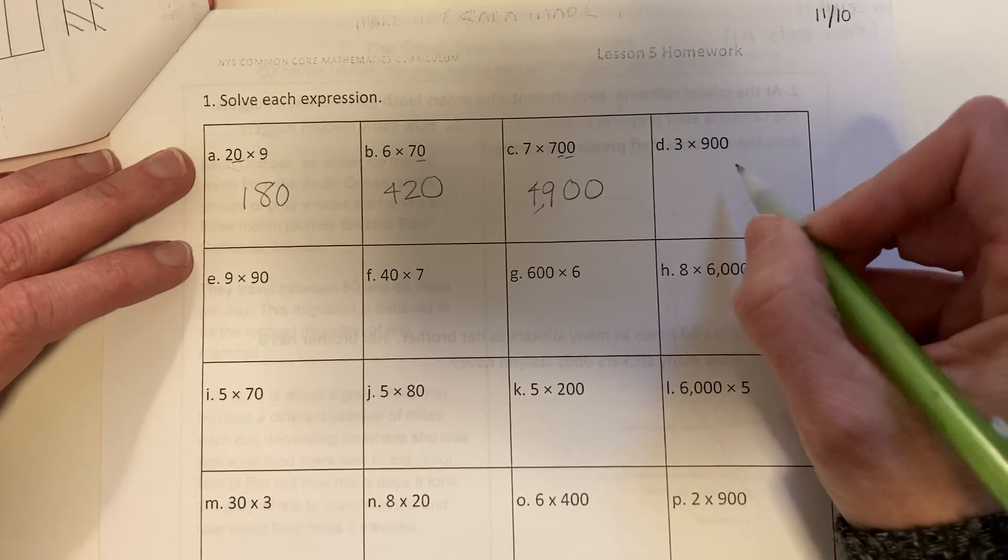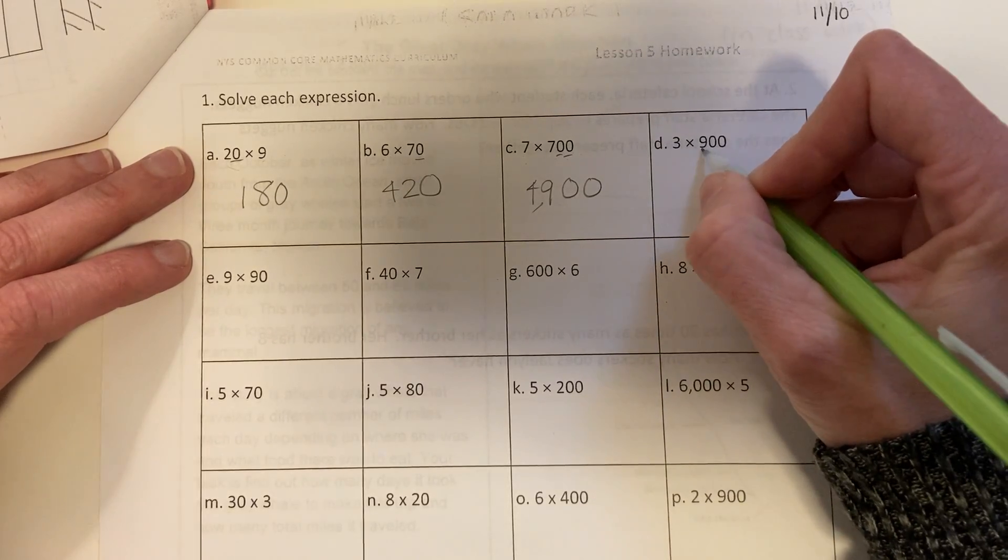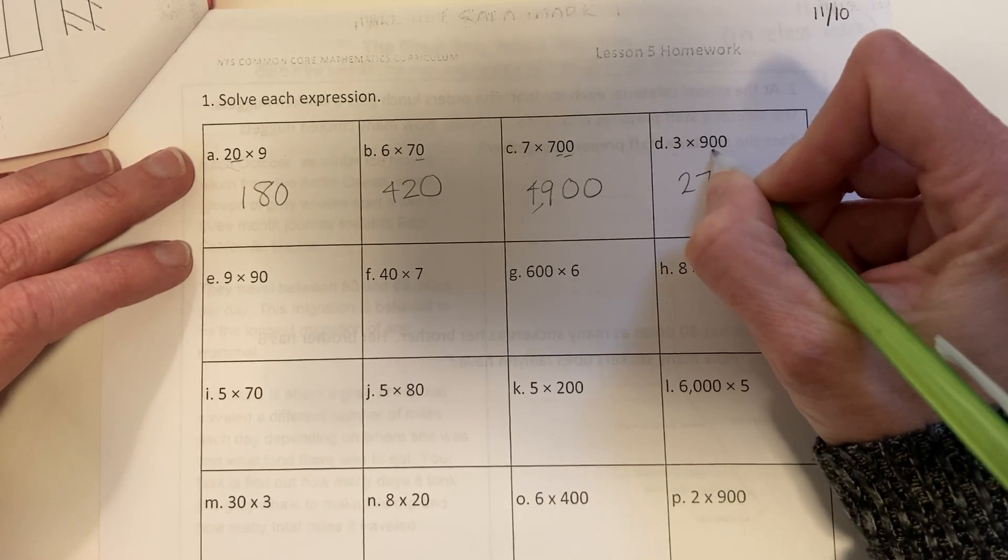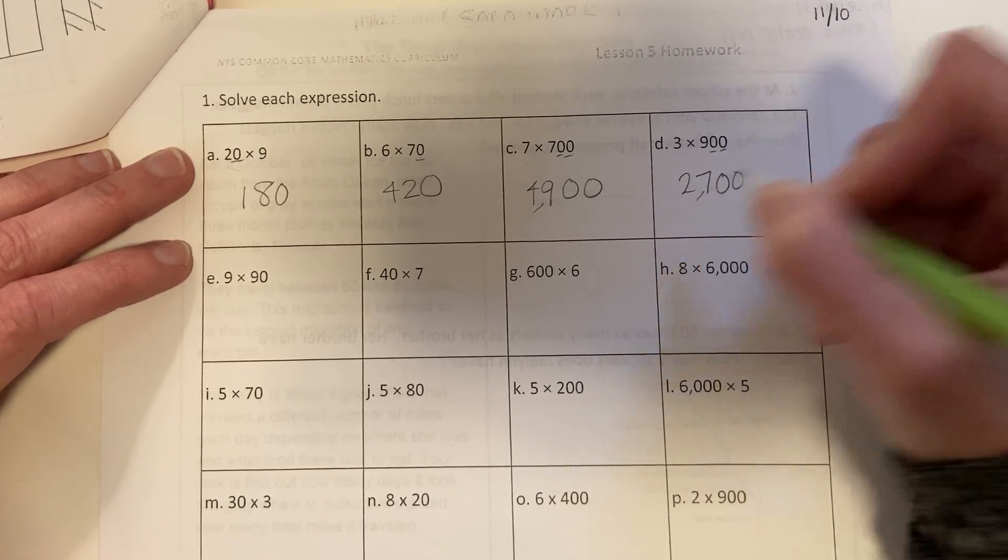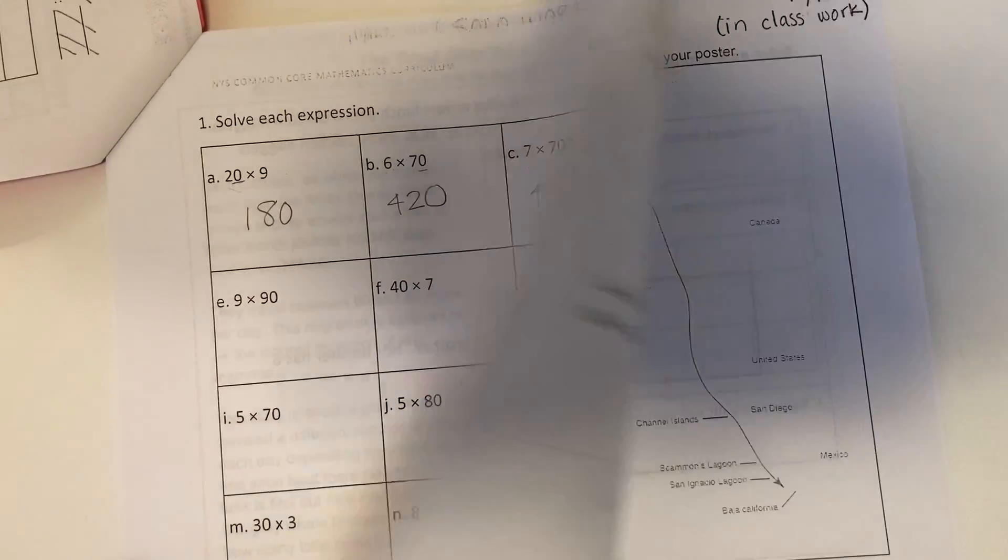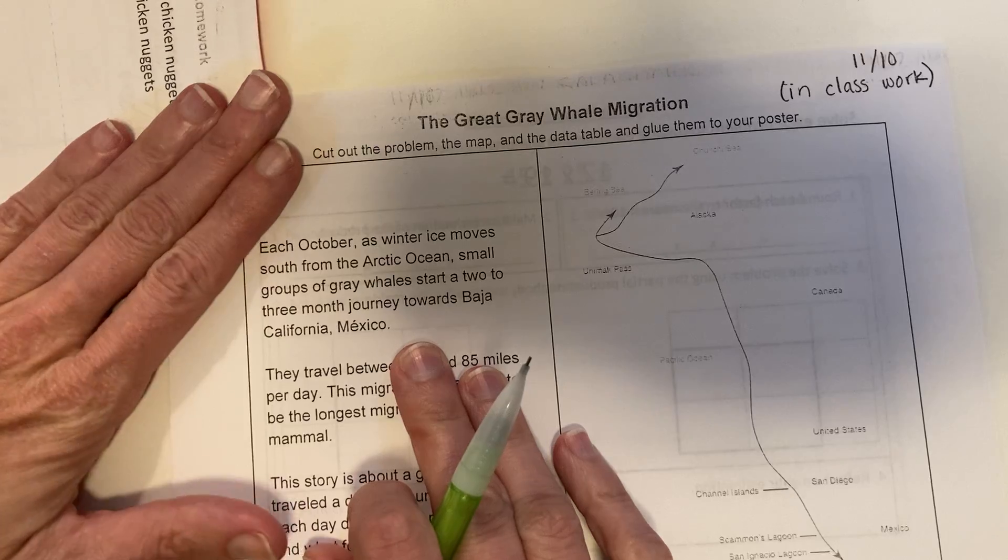3 times 900 is the same as 3 times 9 times 100. 3 times 9 is 27, add two zeros, 2,700. Then on the second page, page 4, there are just a few word problems.